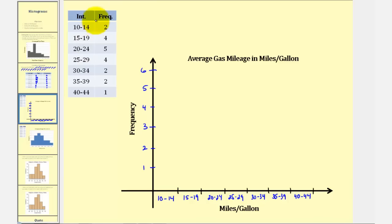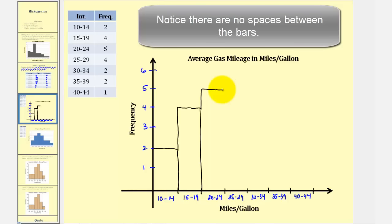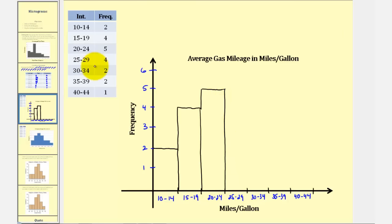And now we'll construct a bar for each bin or each interval. So the interval from ten to fourteen has a frequency of two, so we make a bar with a height of two. The interval from fifteen to nineteen has a frequency of four, so we make a bar with a height of four over this interval. The next interval has a frequency of five, so we make a bar with a height of five. The next frequency is four. The next two frequencies are two. And the last frequency is one. And here's our histogram.